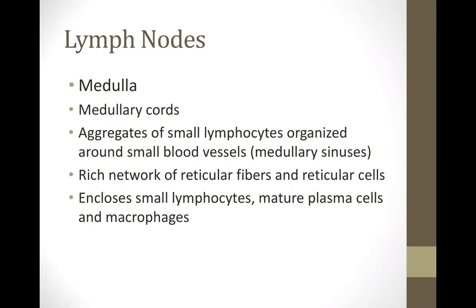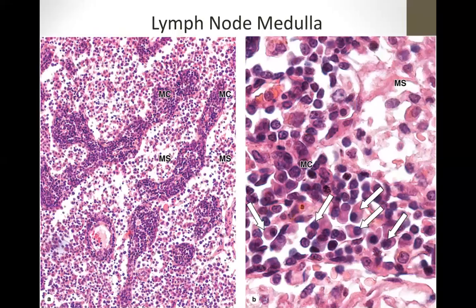In this image, the medullary cords are visible and the spaces in between are the medullary sinuses — scattered lymphocytes are also seen. If you see medullary cords with spaces in between, you are at the medulla of the lymph node.